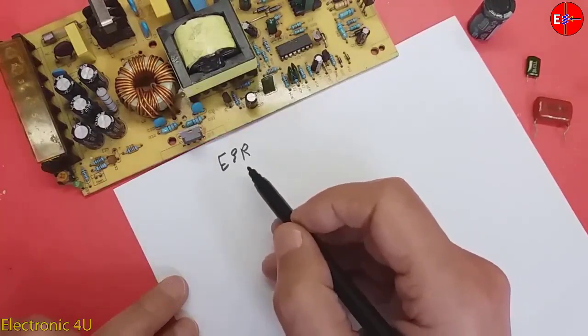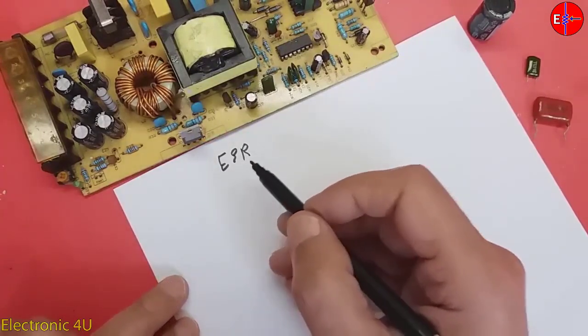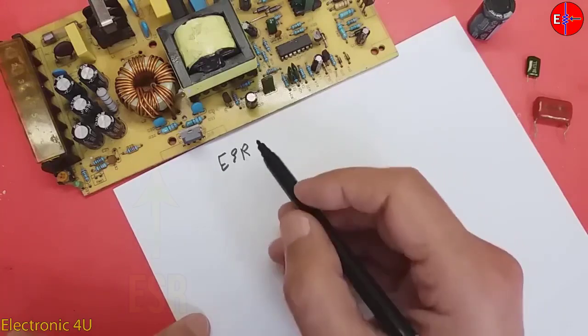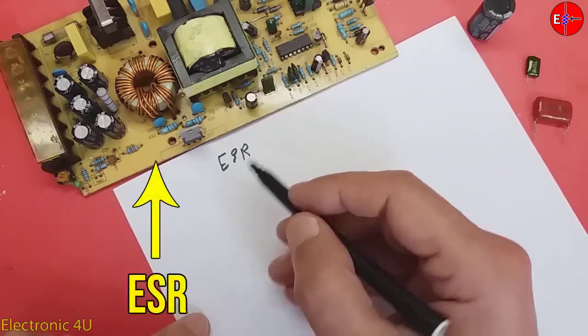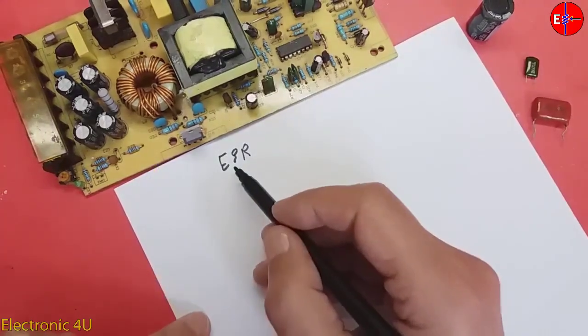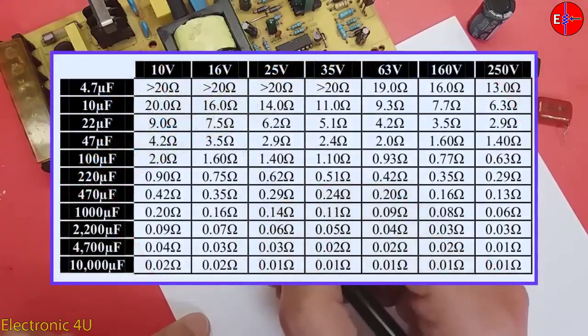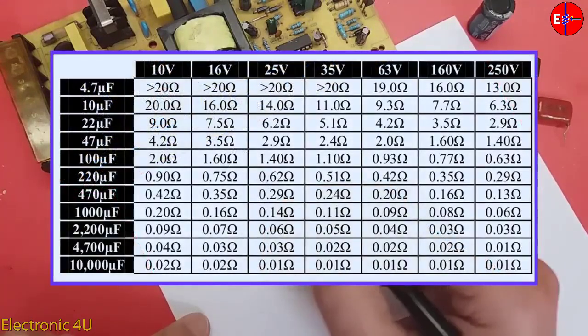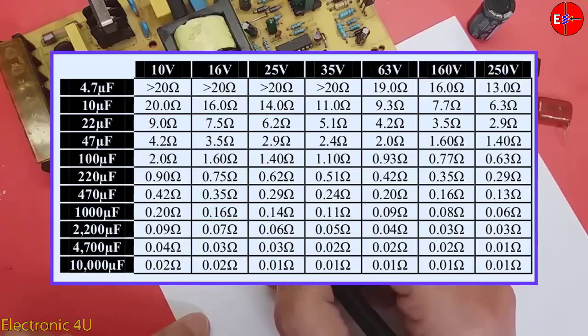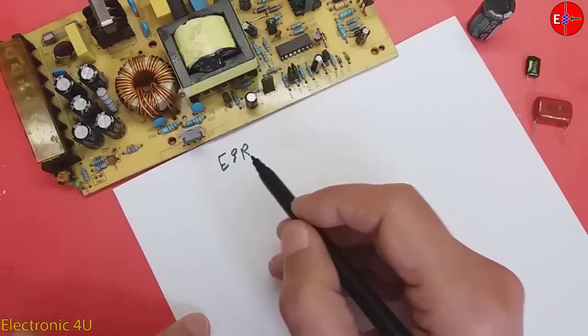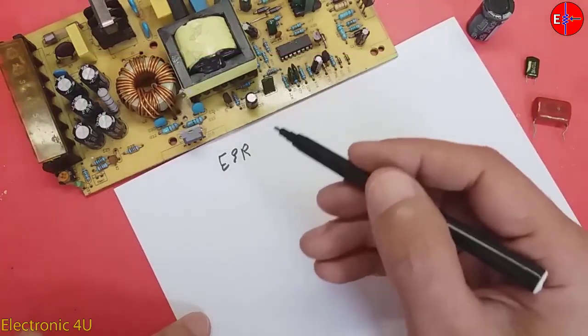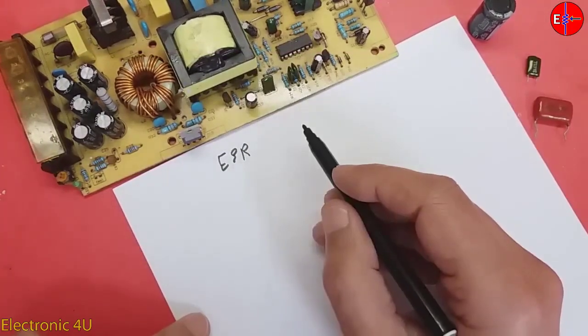ESR is the internal resistance of the capacitor. When the capacitor is damaged, its internal resistance increases. So, according to the existing table, we should compare the value of ESR according to the capacitor capacity with the table. If a capacitor is damaged, its ESR value will always increase, not decrease.